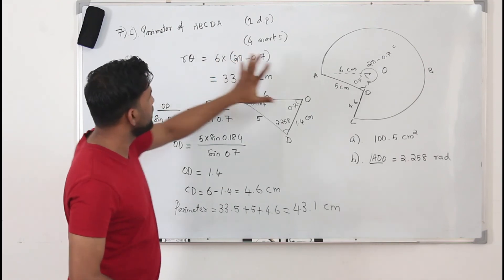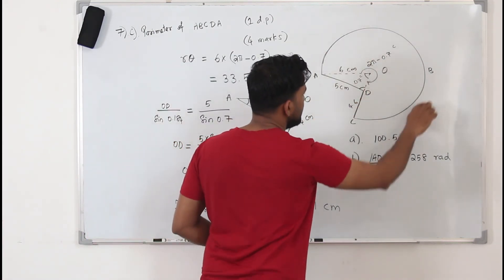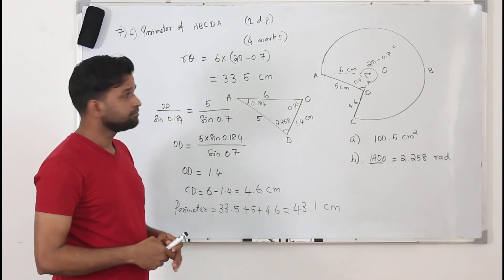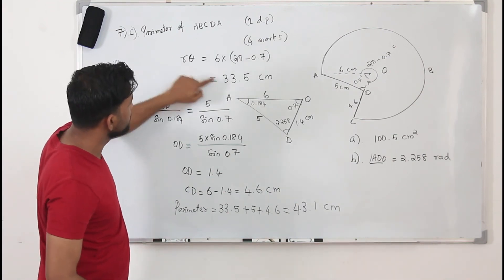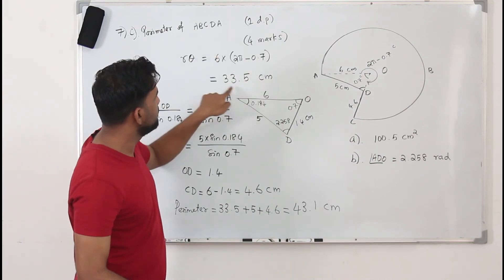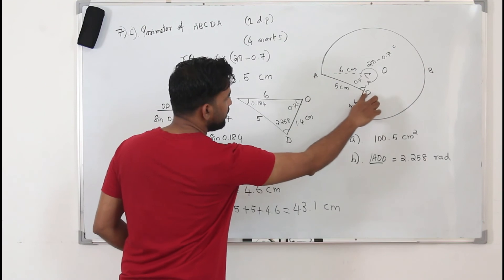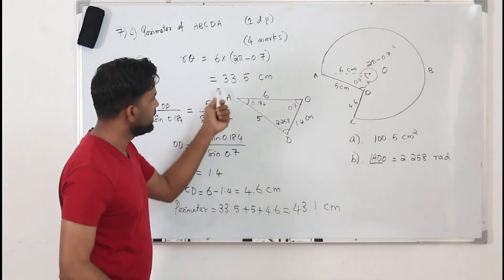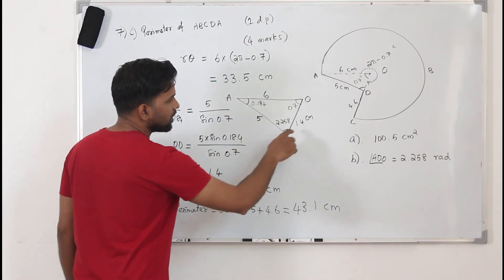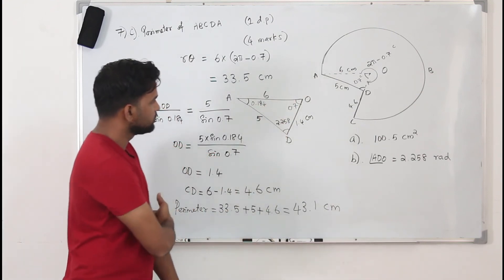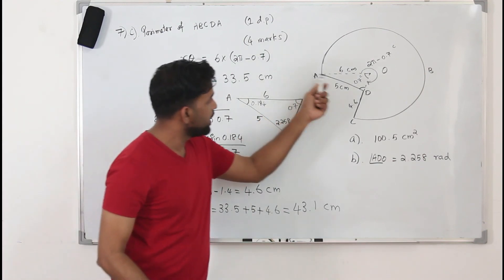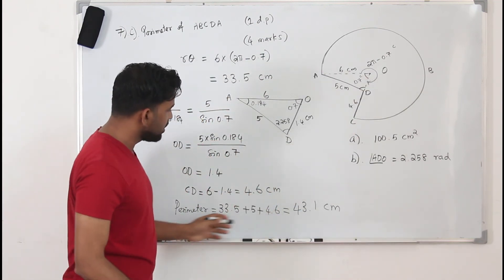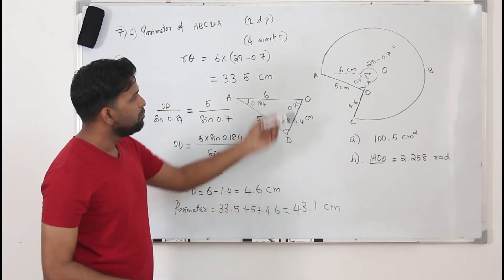To summarize Part C: to find the perimeter of the shape, find the arc length using angle 2π minus 0.7 with the formula R theta — that gives 33.5. We know AD = 5. To find CD, we need the small length OD by applying the sine rule in the triangle, then CD equals 6 minus OD, which is 4.6. Adding them all up gives the perimeter of 43.1 cm.